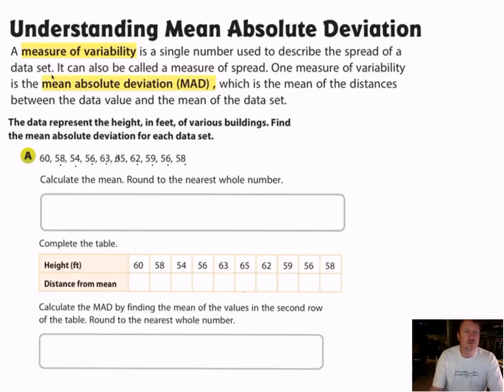So one measure of variability that we're going to use, and this is the main one we're going to talk about, is the mean absolute deviation or MAD, which is the mean of the distances. So it's the average of the distances between the data value, each one of the pieces of data, and the mean or the average of the data set.